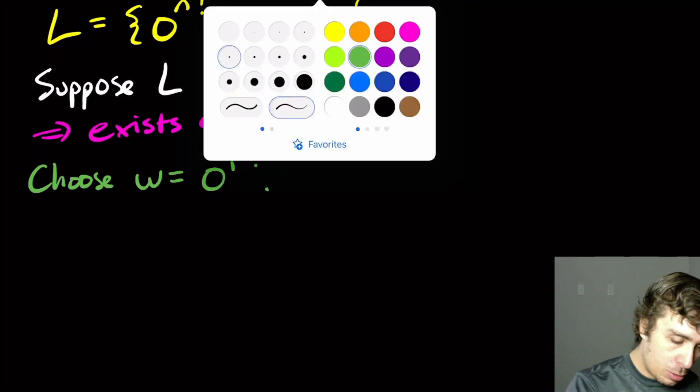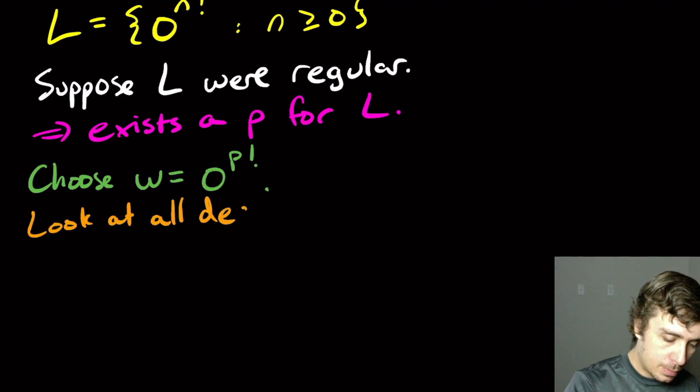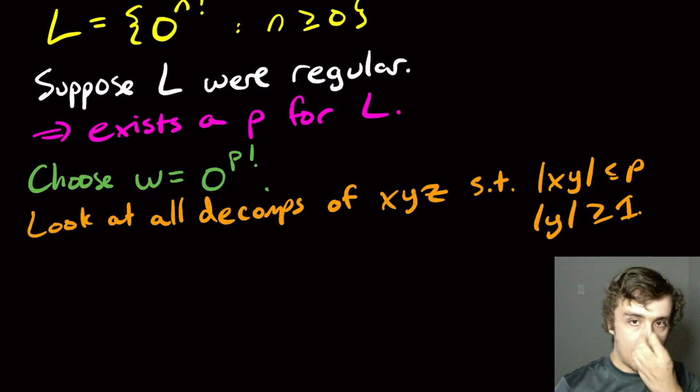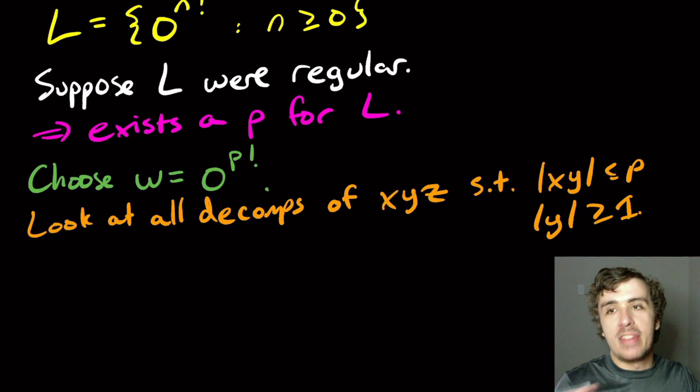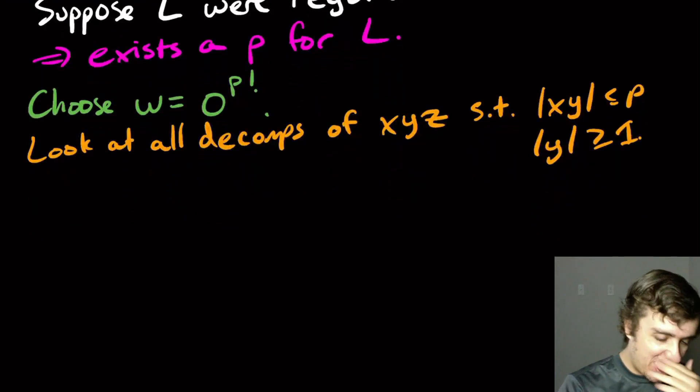Okay, so what we need to do is to look at all the compositions of x, y, and z such that the length of x, y is at most P and the length of y is at least one. Well, here it's not really as important because the string is all zeros. So therefore, we don't really care about what the actual decomposition is. We're just adding some or subtracting some number of zeros into the string. We don't care about the actual string. But let's write it down anyway.